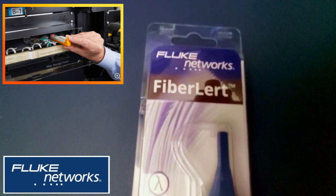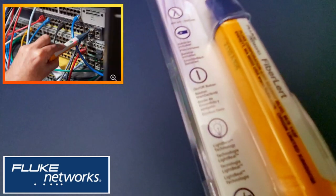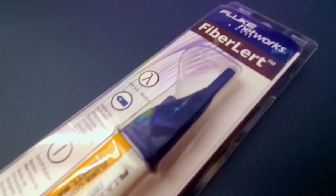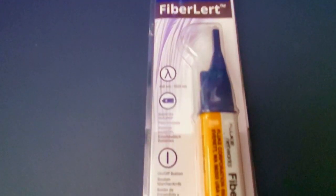And unlike many fiber light detectors, this one is easy to use. Simply place it in front of the fiber end face or port, and the light and tone indicate an active fiber. And there is zero setup or interpretation.